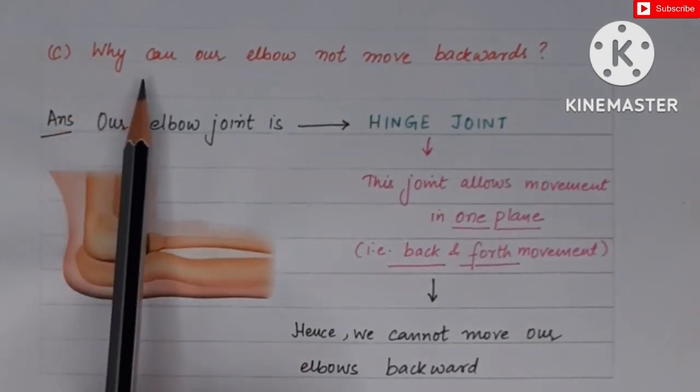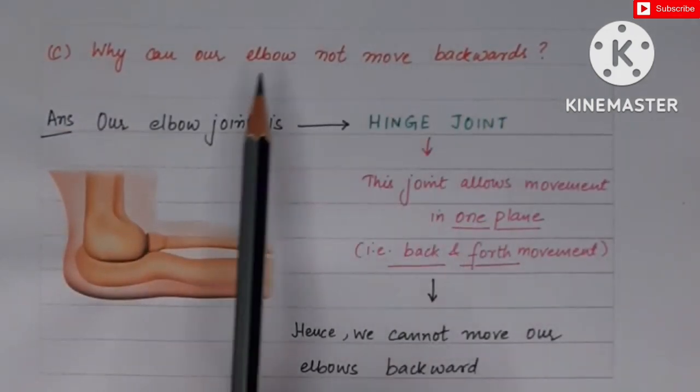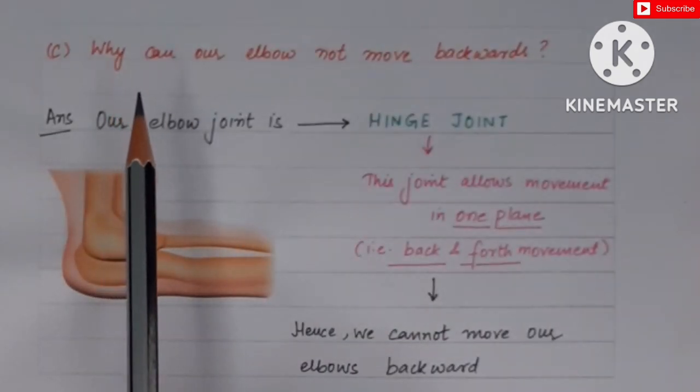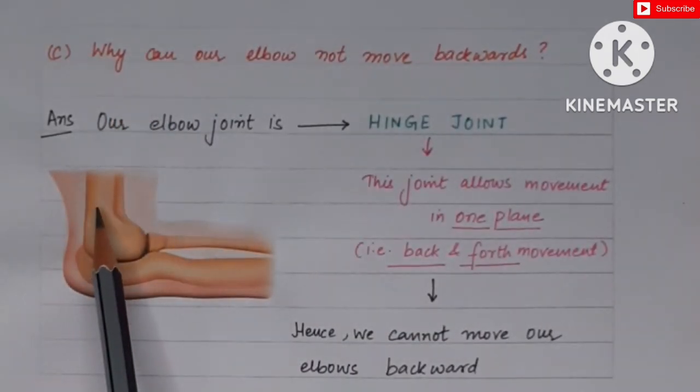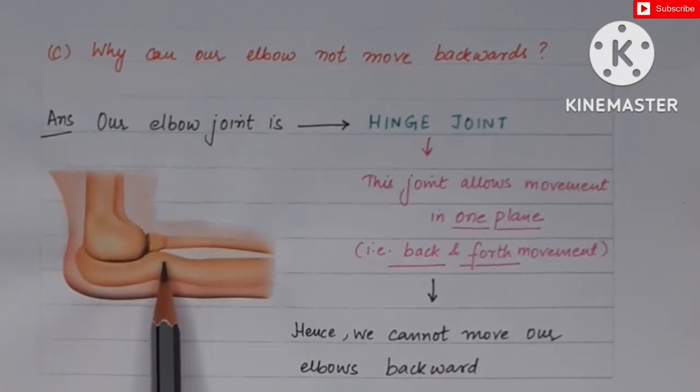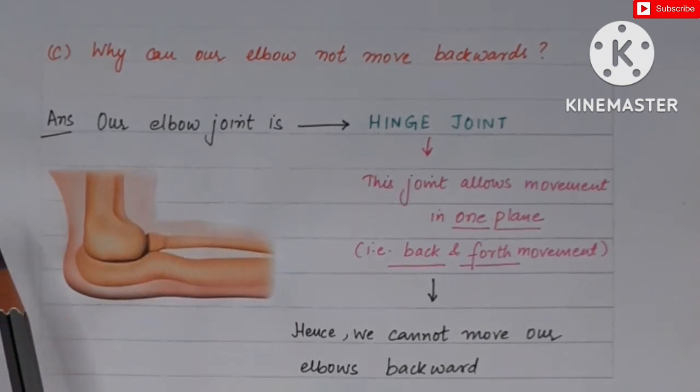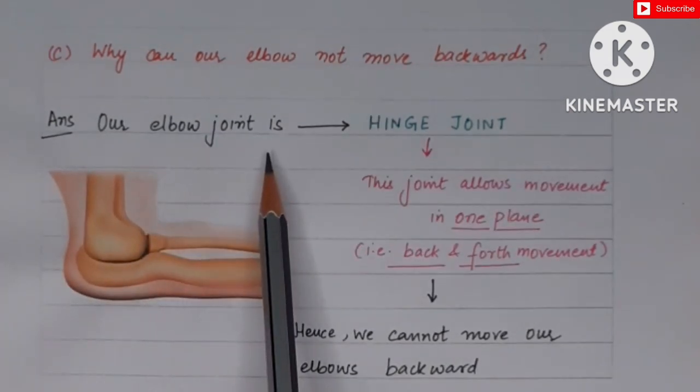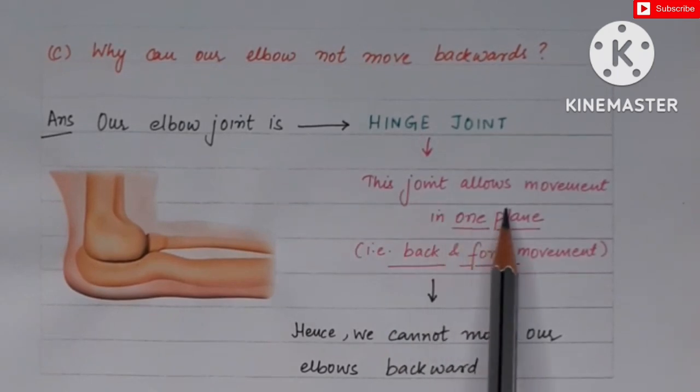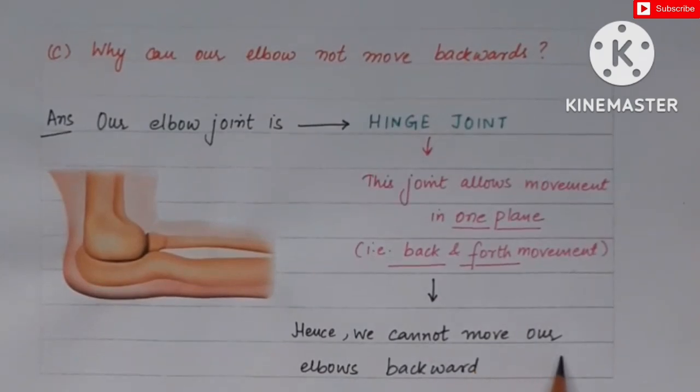Now the last part is: why can our elbow not move backward? Our elbow cannot move backward. Why can it not move? Because the joint between our upper arm bone and lower arm bone is the hinge joint. And due to this hinge joint, our lower arm can only move in the upward direction, it cannot move in the backward direction. So our elbow joint is the hinge joint and this joint allows the movement only in one plane, that is the back and forth movement. Hence we cannot move our elbows backward. This is the reason why we cannot move our elbows backward.